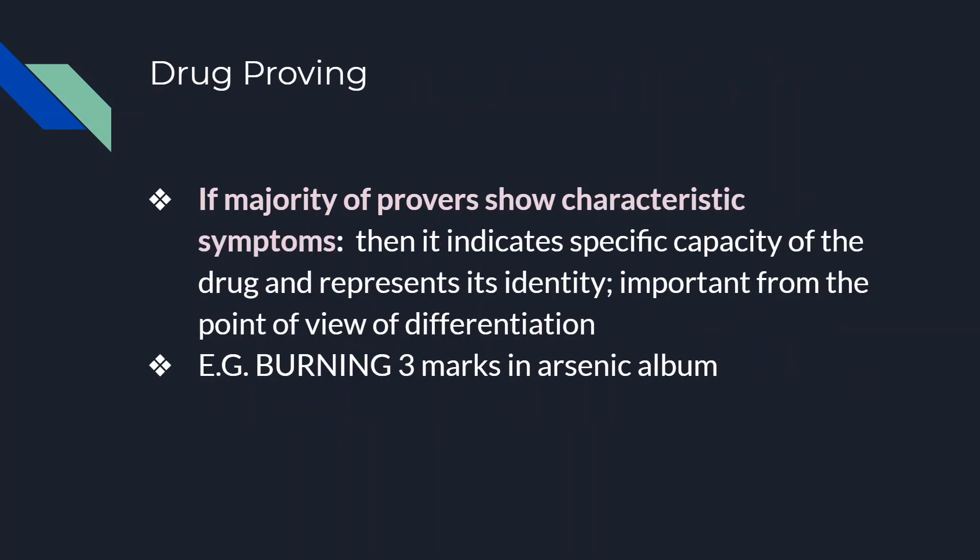If a majority of provers show a characteristic symptom, it indicates the specific capacity of the drug and represents its identity — important from the point of view of differentiation. For example, burning — three marks — in Arsenicum album. Thus, it becomes a characteristic symptom by virtue of intensity.